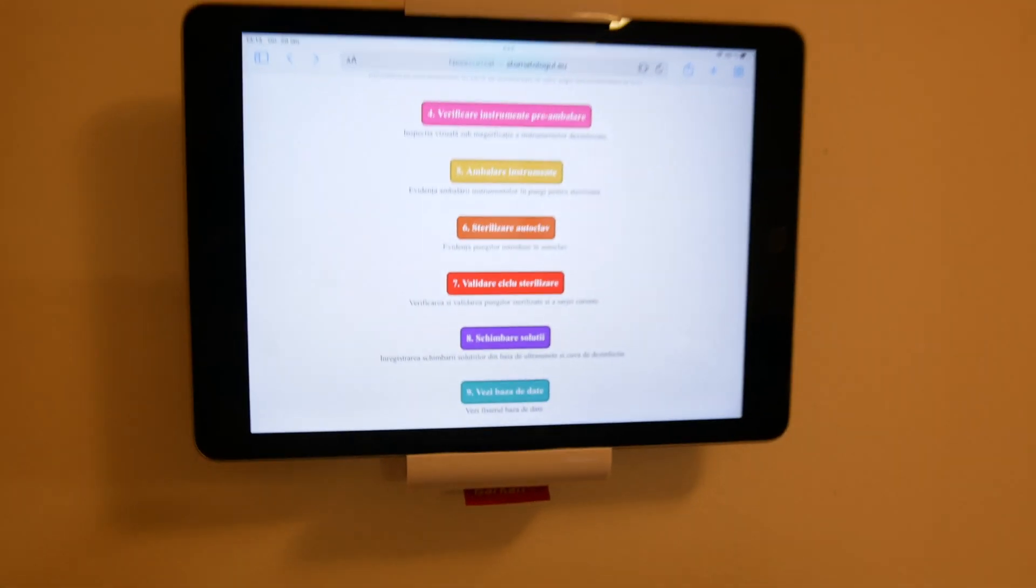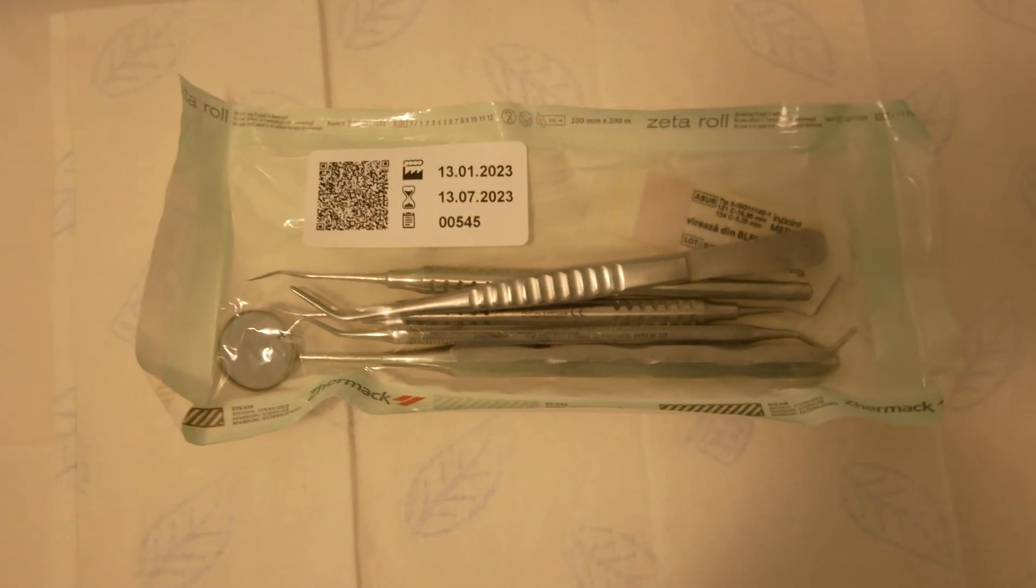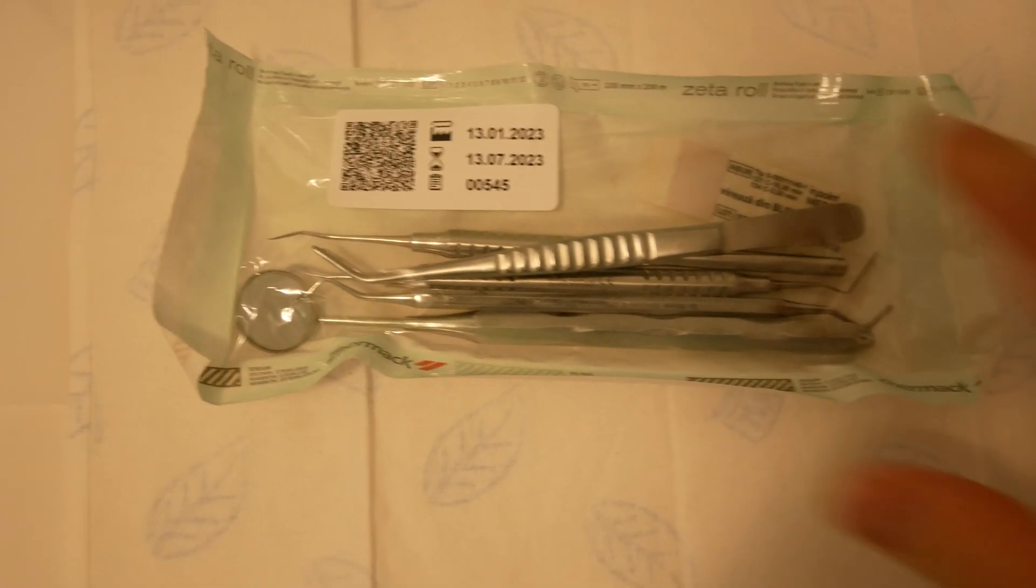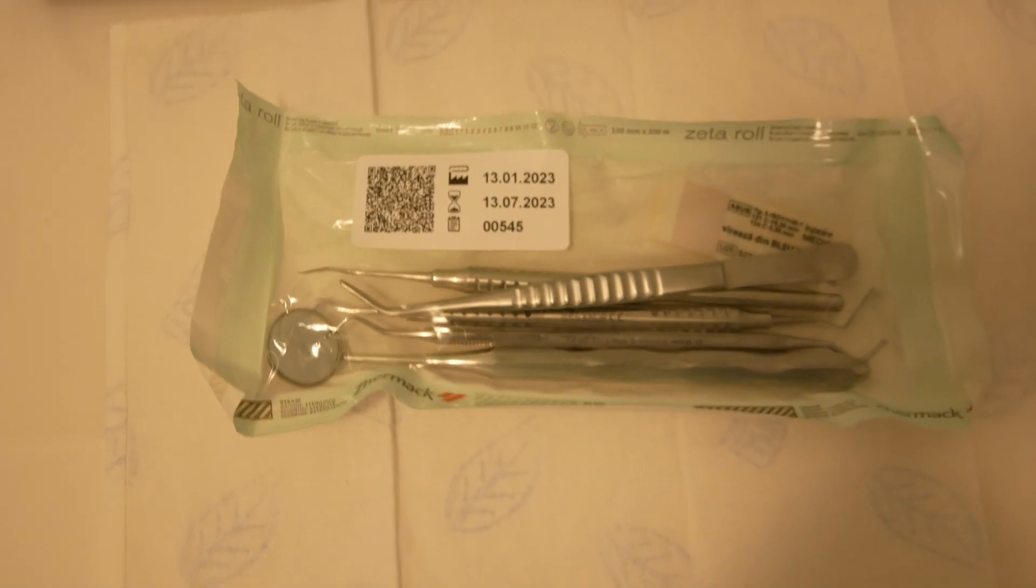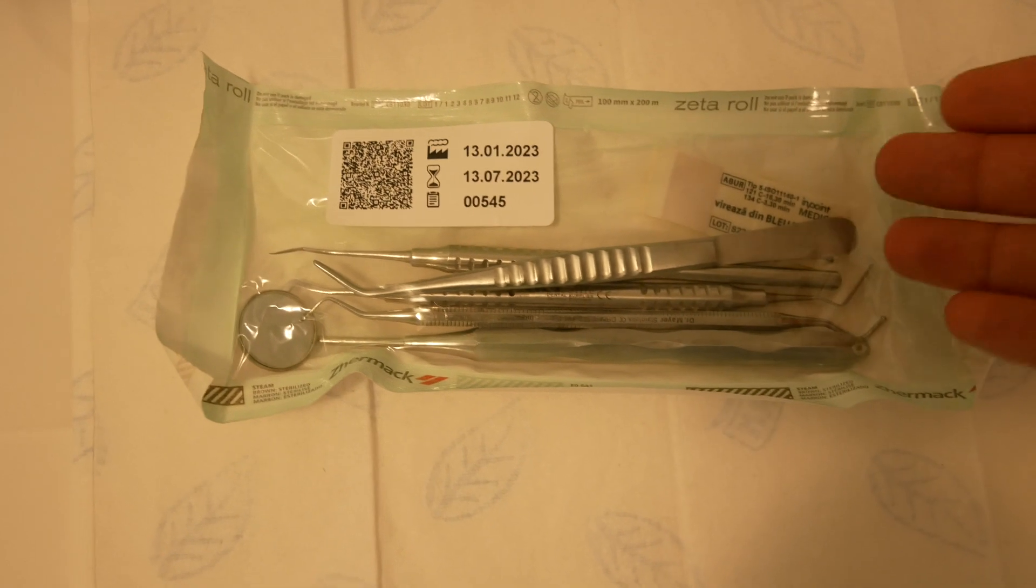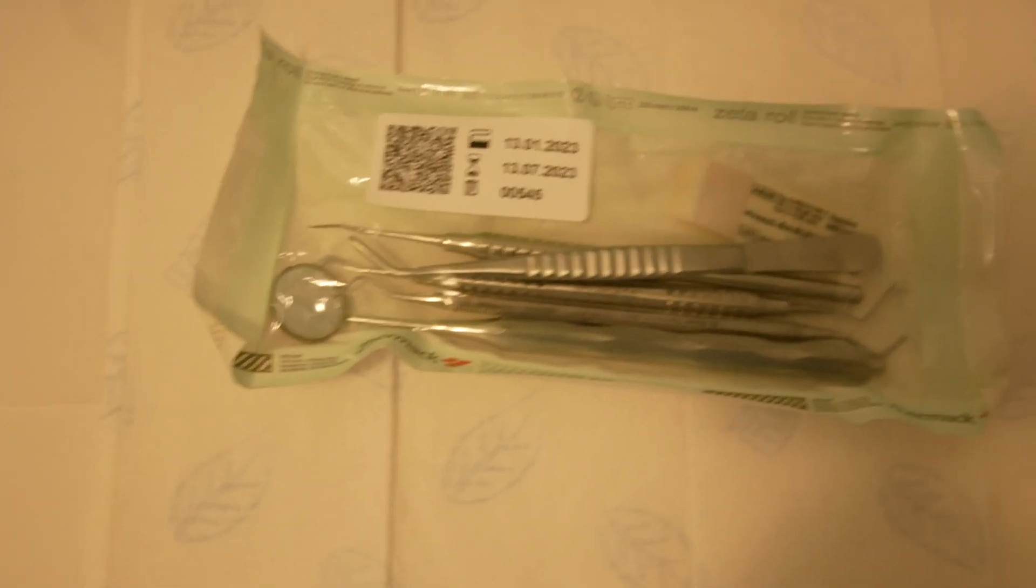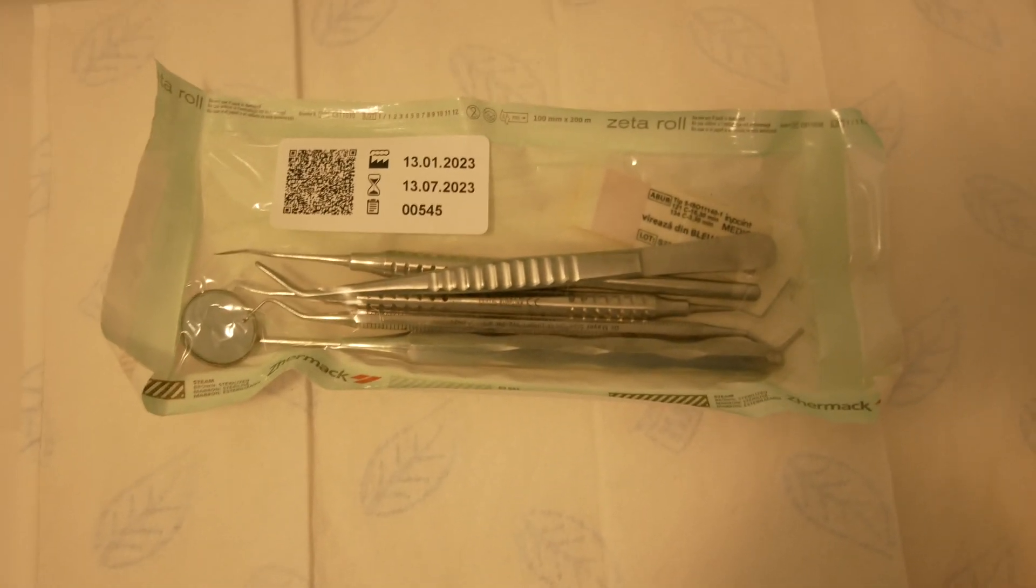And after the sterilization, the packaging should look like this. As you see, the class 5 integrated strip marker has a pink color now. It's changed its color from blue to pink. That means the inside of the bag is sterile.